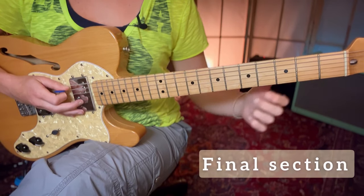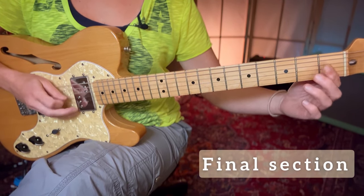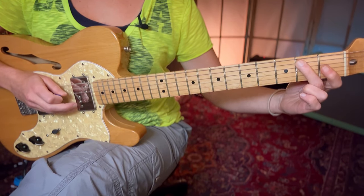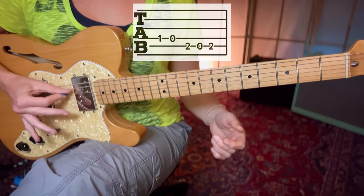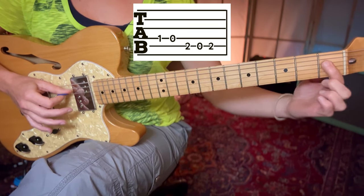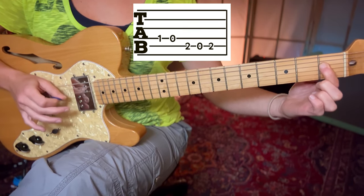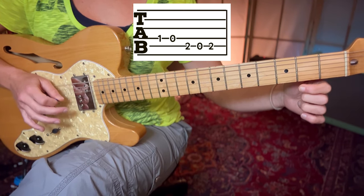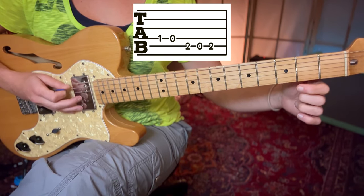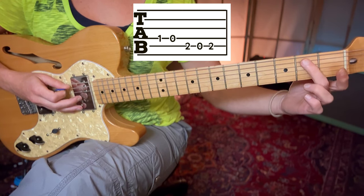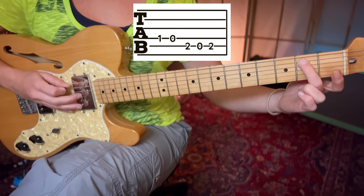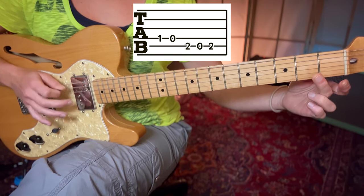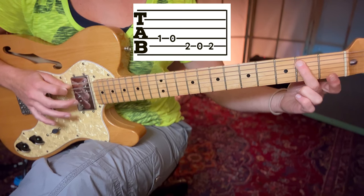And the final section. We take the pick to the D string, play the first fret, then take the index finger off to play the open D string. We come up to the A string, play the middle finger on the second fret. Take the middle finger off to play the open A and then put the middle finger back on to the second fret.